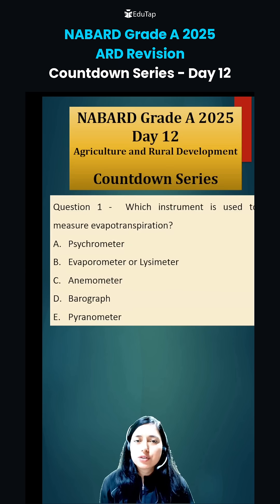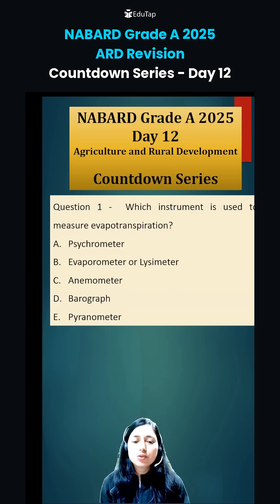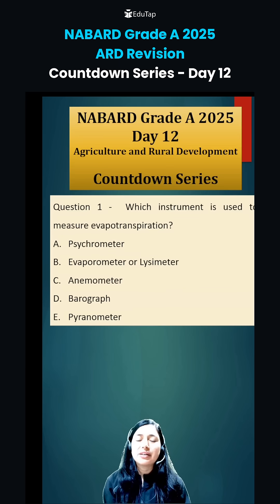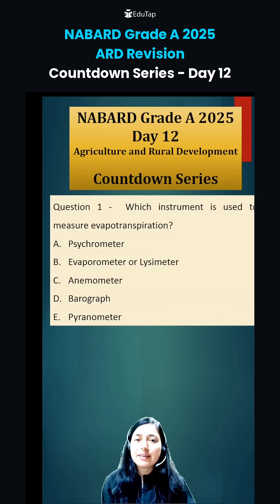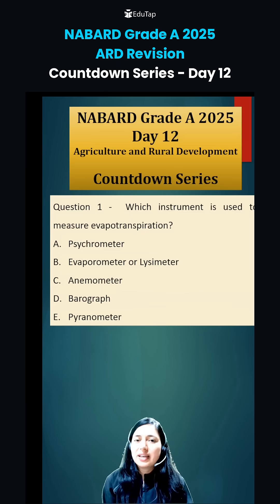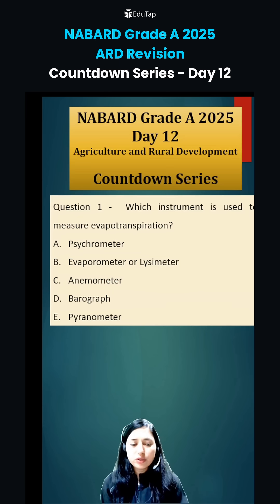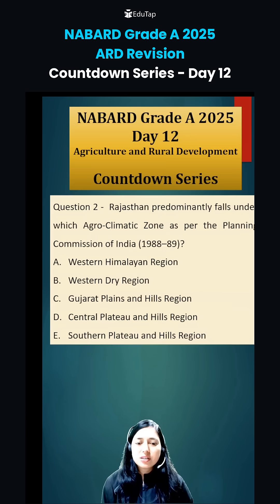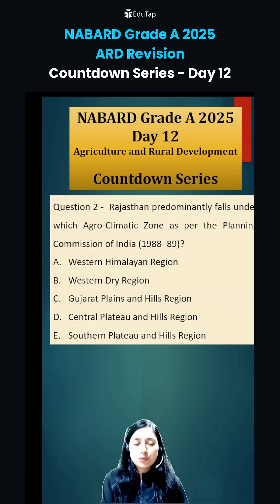Now let's see the questions of Day 12. The first question of Day 12 is: which instrument is used to measure evapotranspiration? This is very important. You have to learn all the instruments used to measure different things — like what is used for relative humidity, sunshine, temperature, and soil temperature. Everything is very important, so do remember these instruments.